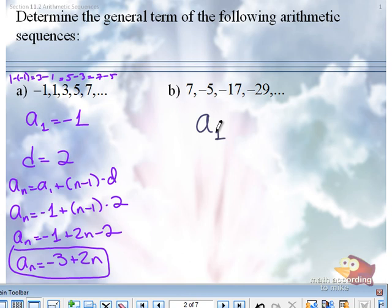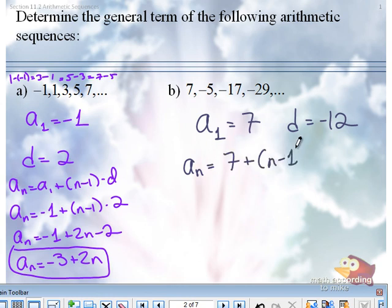What's your first term? What's your common difference? So we'll have aₙ = a₁, seven, plus (n-1) times negative 12. Please be careful with the negative.